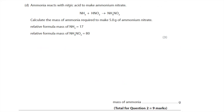Ammonium reacts with nitric acid to form ammonium nitrate. Calculate the mass of ammonia required to make 5.0 grams of ammonium nitrate. First, note the known mass (5.0 g of ammonium nitrate) and the unknown (mass of ammonia). The molar ratios show one mole of ammonia reacts with one mole of nitric acid to produce one mole of ammonium nitrate — a 1:1 ratio.